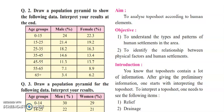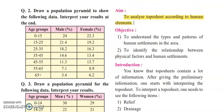Let us look at the aim of this practical. The aim is to analyze the topo sheet according to human elements. If you have to analyze the topo sheet on the basis of human elements, that is the aim. We also aim to understand the types and patterns of human settlements in this area — what type it is and what the pattern is: whether it is linear, nucleated, dispersed, or isolated, and in which area that pattern is visible.